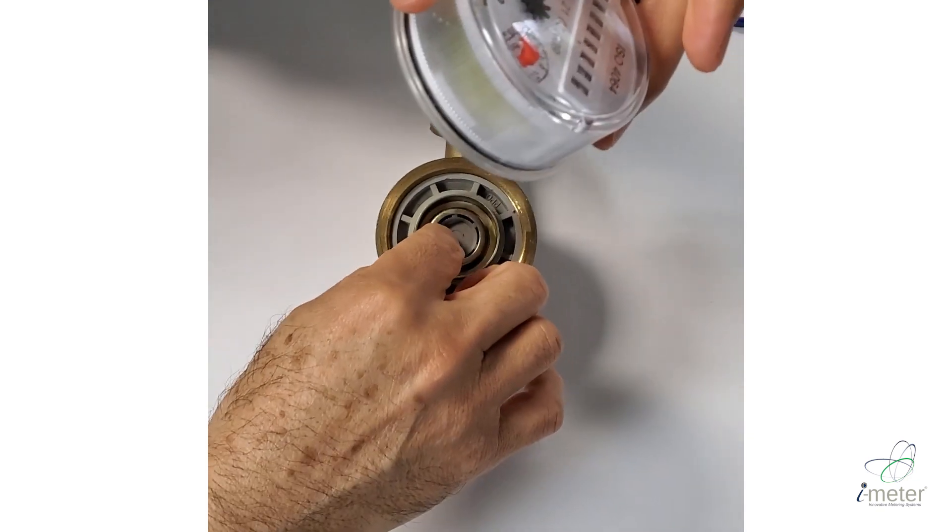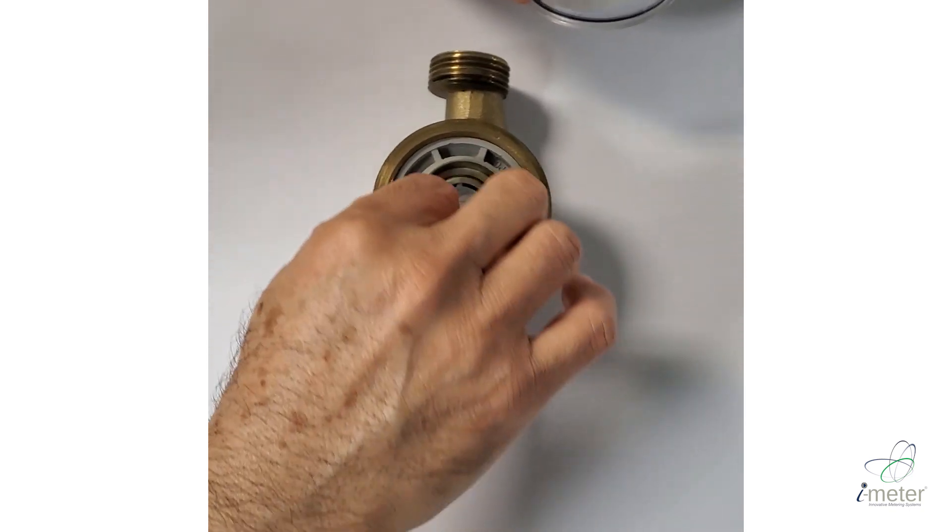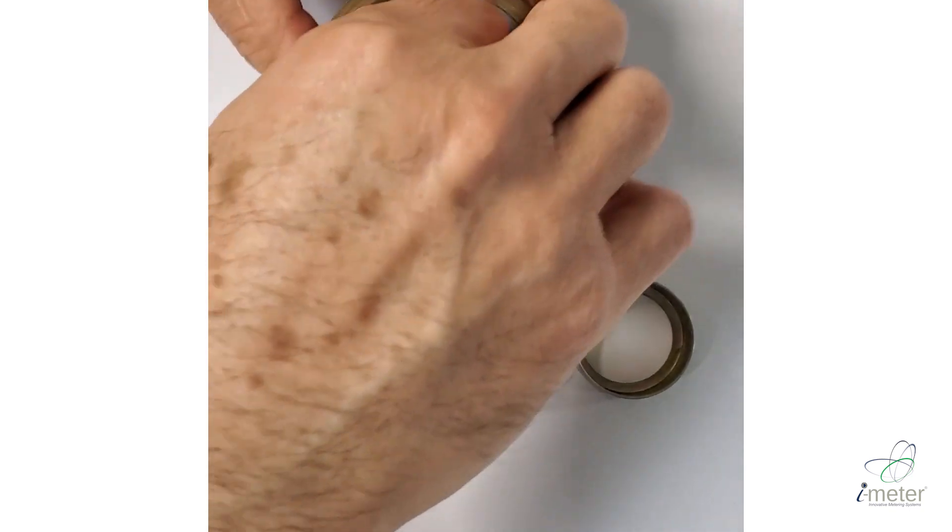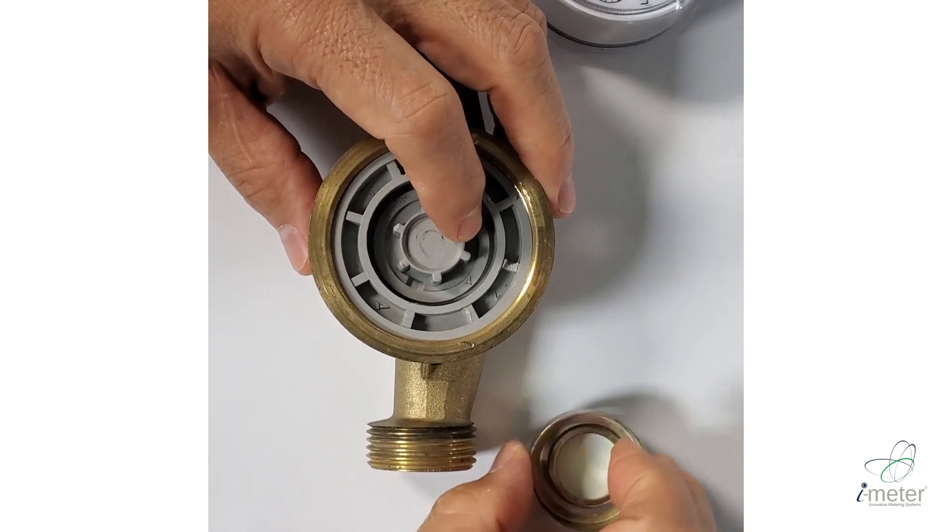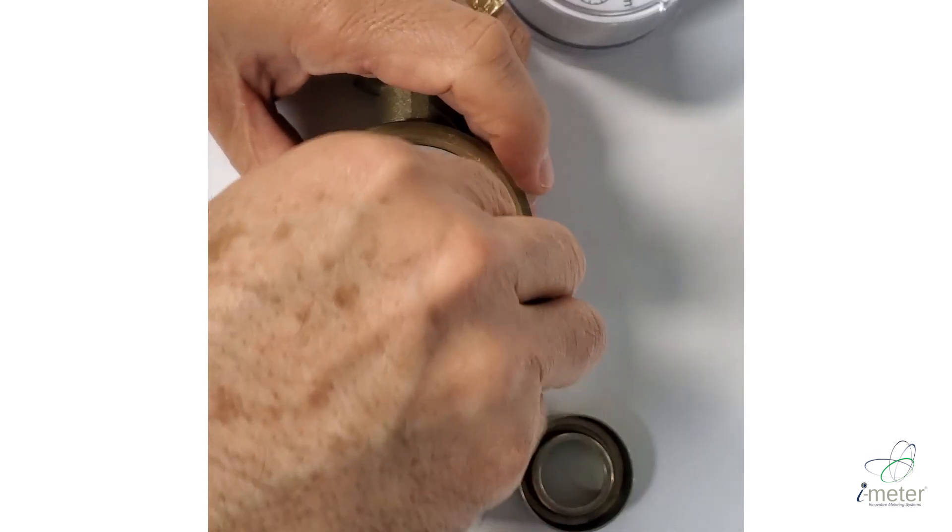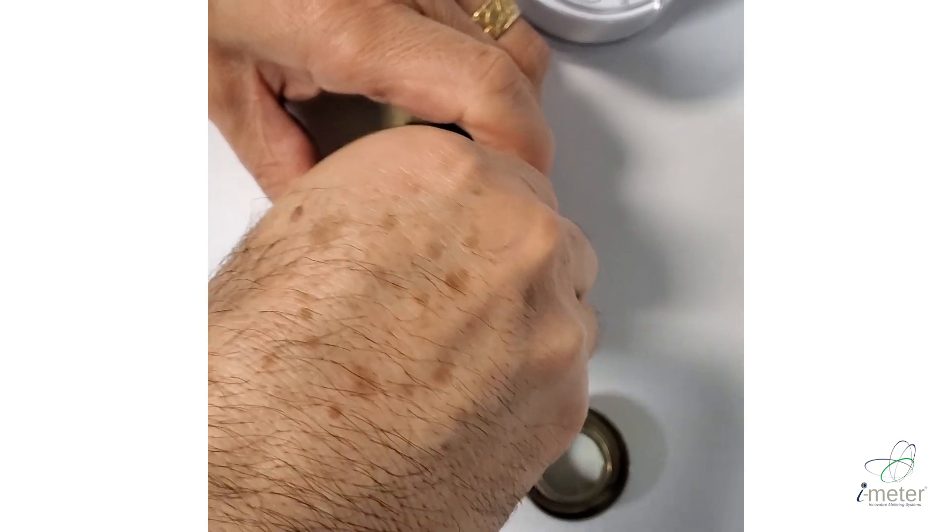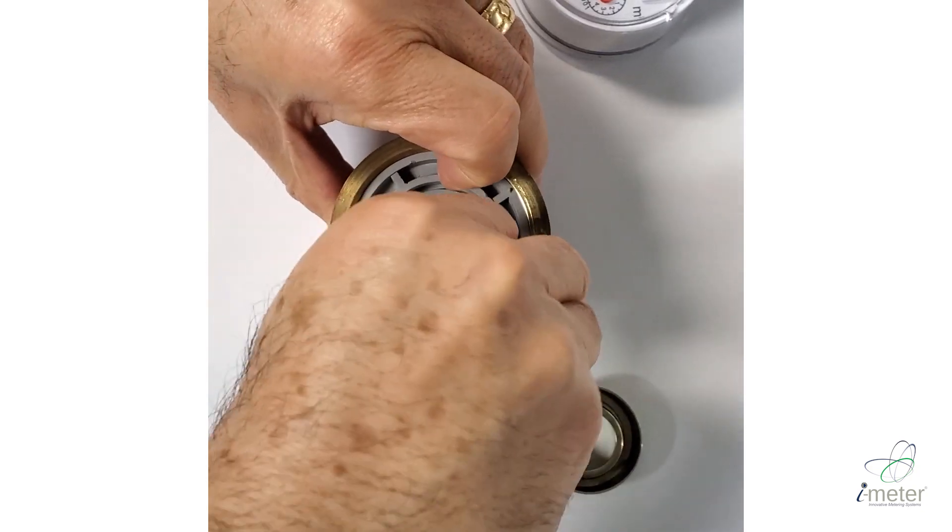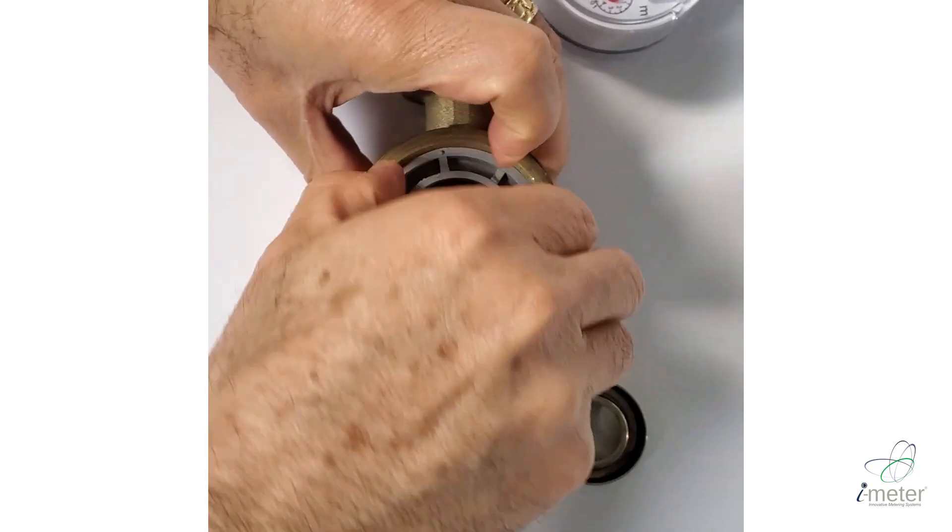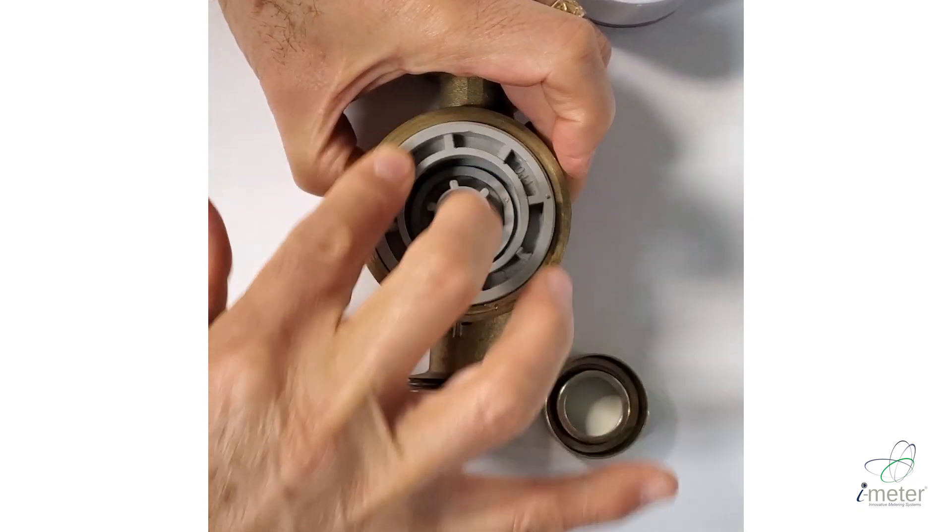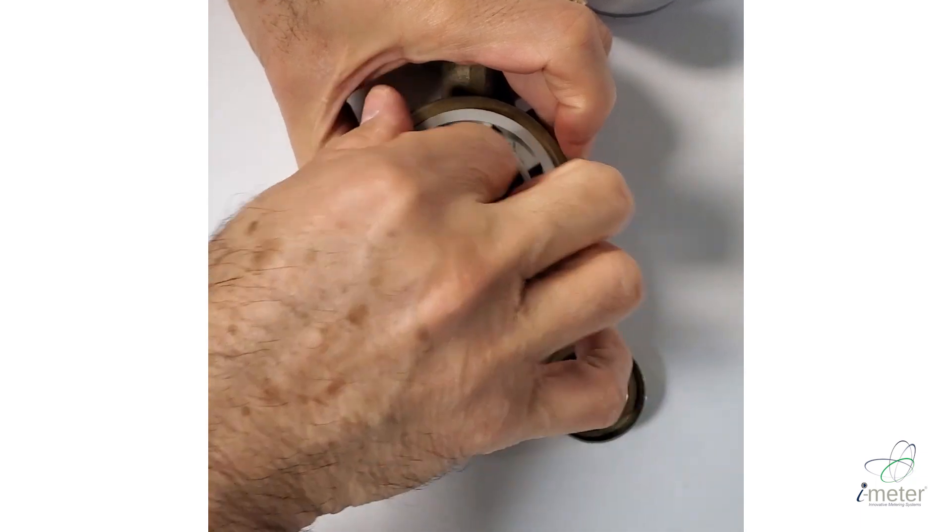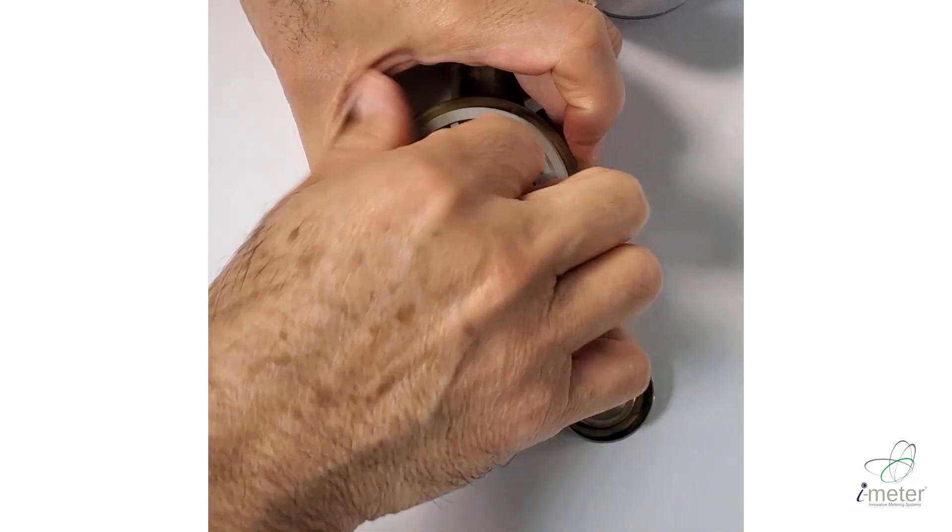So here what we're going to do, we're going to remove these magnetic shields. These metal rings protect the magnet from turning and I'll show you what the magnet is. So internally these discs contain the water turbine.